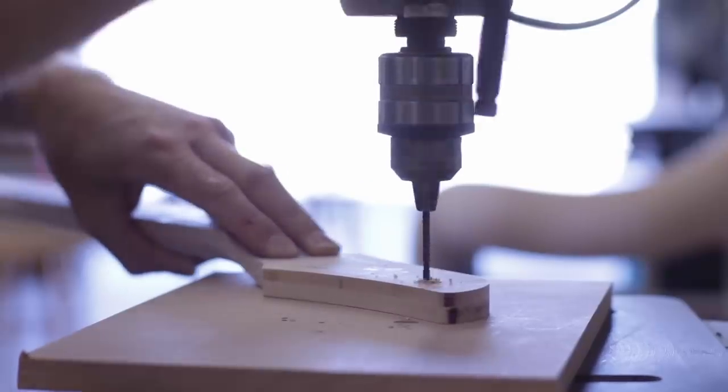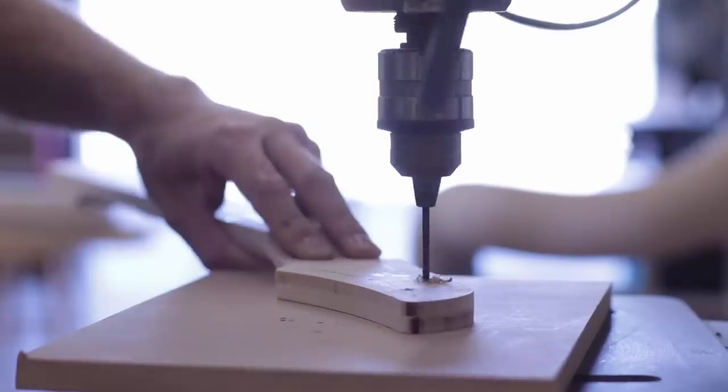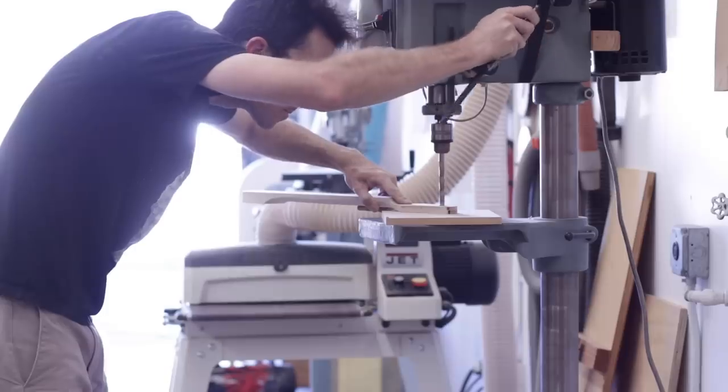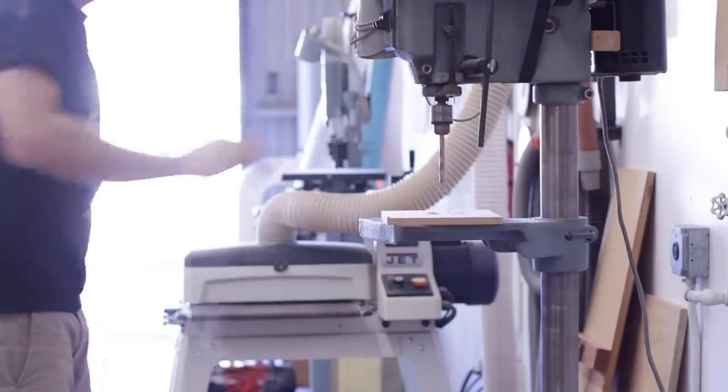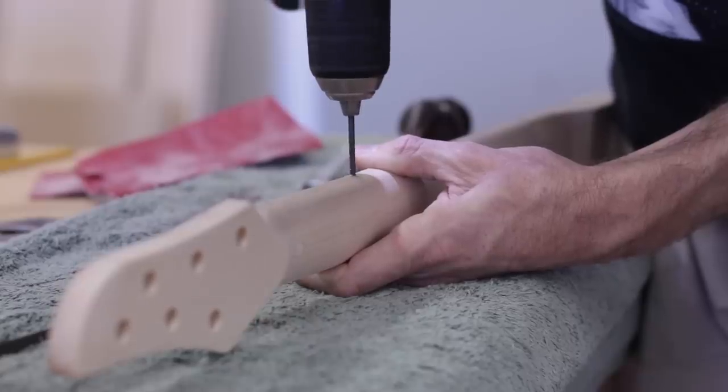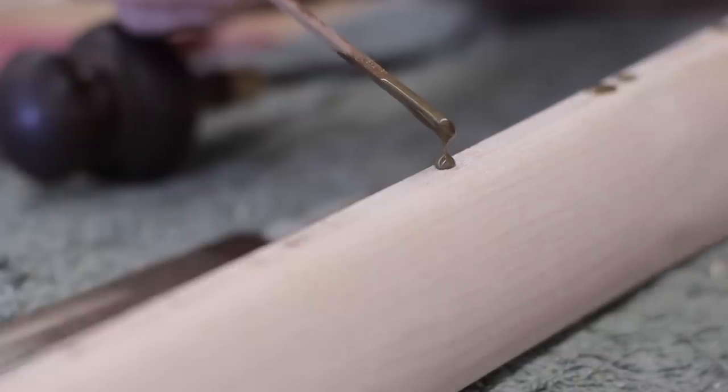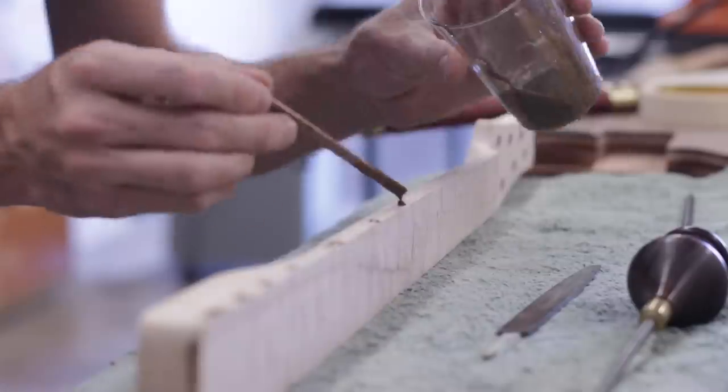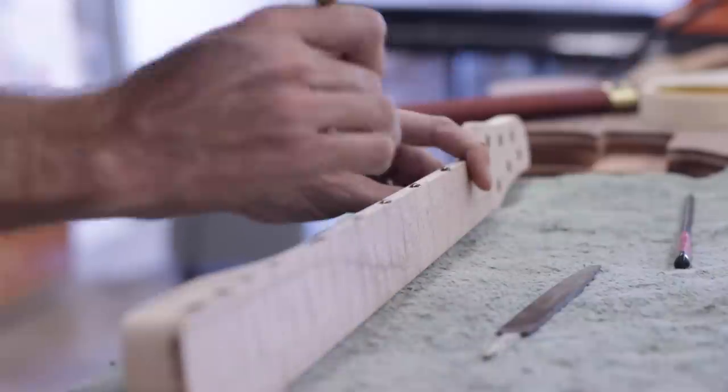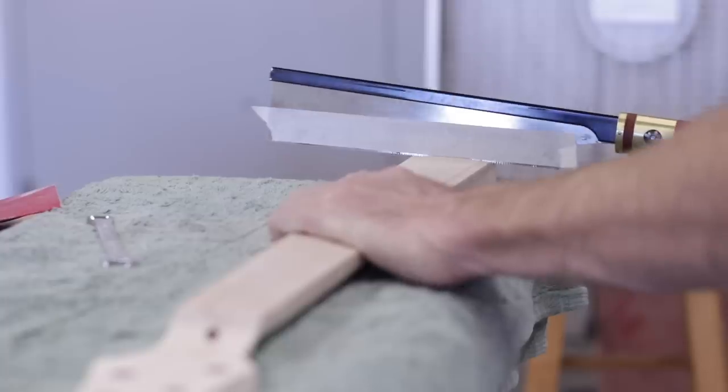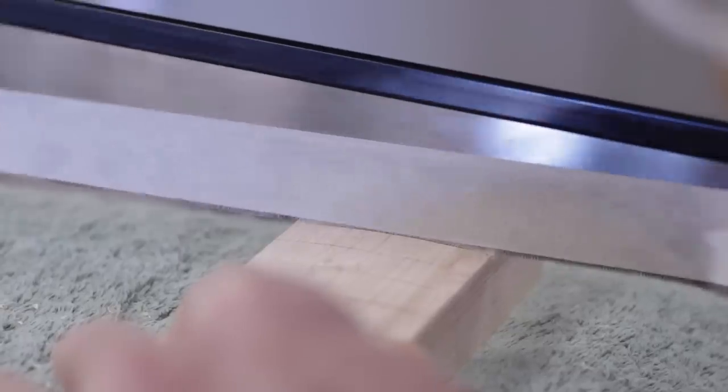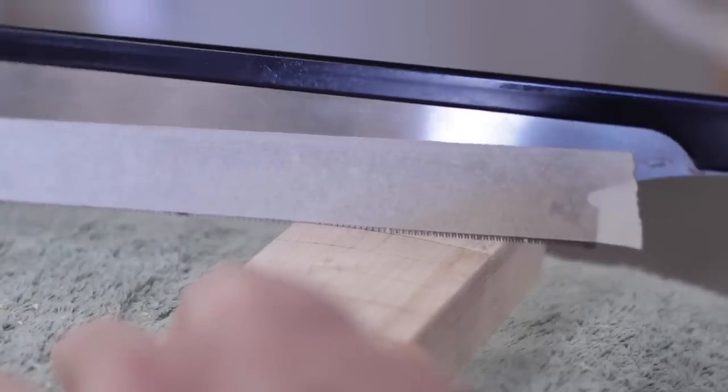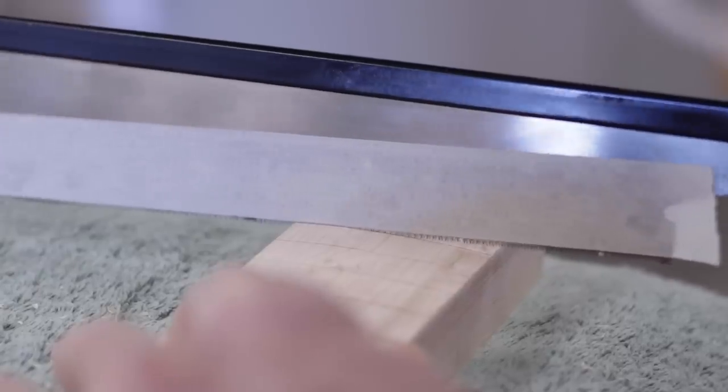I could then drill in some holes into the headstock for the tuners, as well as drill some small holes on the side of the fretboard for the side dots. And from there it was time to put in the frets, and the first thing I needed to do was cut the fret slots to their final depth. You can see here the piece of tape on my saw blade indicates how deep I should be cutting.